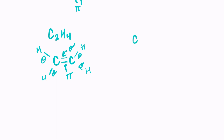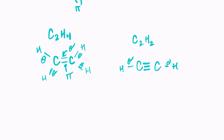What if you were given C2H2? Draw it out — two carbons, two hydrogens, one on either side. Each carbon still needs three more bonds, so that will be a triple bond. The single bonds are always sigma bonds. With the triple bond, the top is sigma and the bottom two are pi bonds.